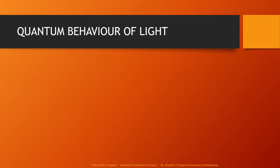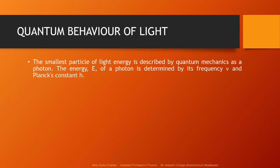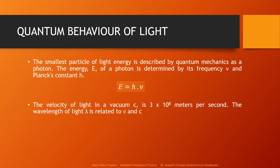Now let us understand the quantum behavior of light. The smallest particle of light energy is described in quantum mechanics as a photon. The energy of a photon is determined by its frequency ν and Planck's constant h, given as E = hν. The velocity of light in vacuum c is 3×10⁸ m/s, and the wavelength of light λ is related to its frequency ν and velocity c by λ = c/ν.